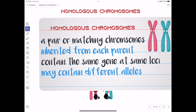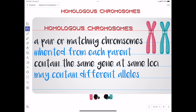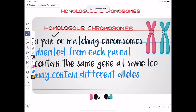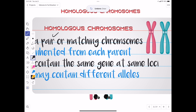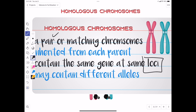The definition of homologous chromosomes: they are a pair of matching chromosomes that are not identical because each may have different alleles. The position of those alleles must always be at the same location — the same locus.